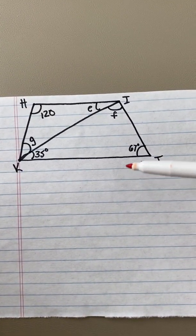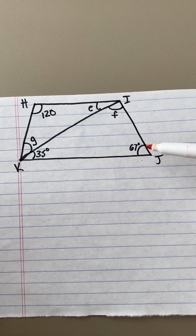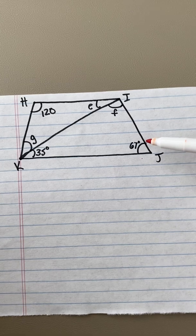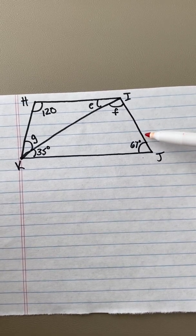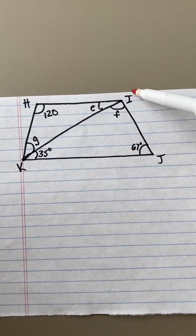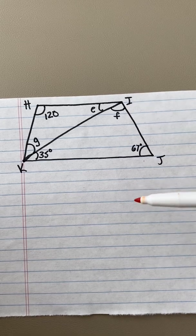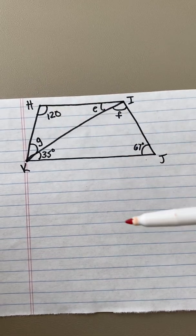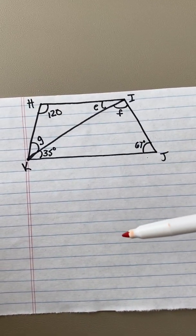We have also learned that the angles between the parallel sides equal 180 degrees. So that means that angle J and angle I, when we add them together, equal 180 degrees, and angle K and angle H, when added together, equal 180 degrees.